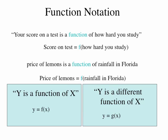We use something called function notation, which is actually one of the more confusing things in algebra this year. We had the sentence: your score on a test is a function of how hard you study. We might shorten that to: score on test equals f of how hard you study. Notice this isn't a variable f times how hard you study — that little f stands for 'is a function of.' We could do the same with the price of lemons: it is f of rainfall in Florida.